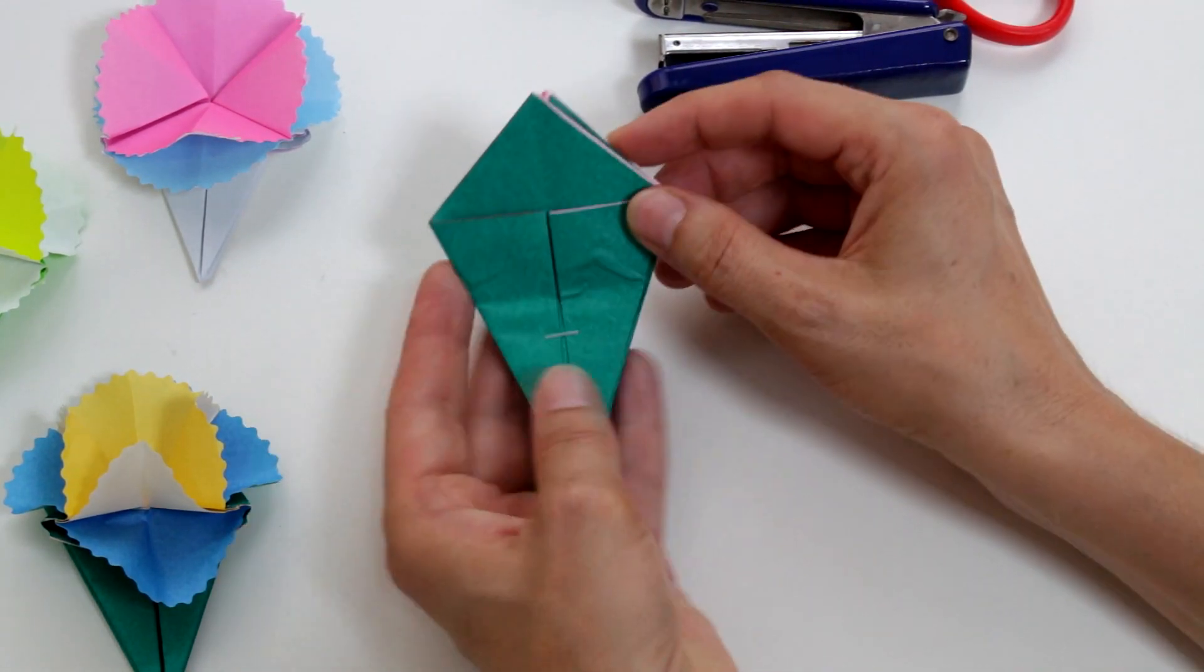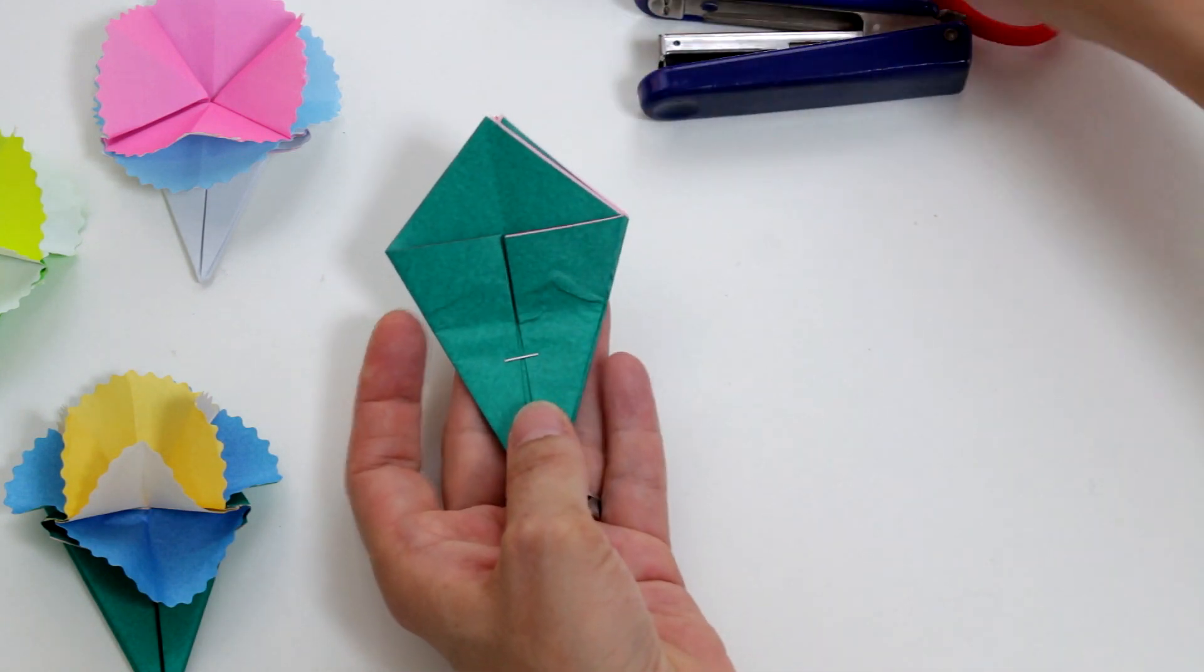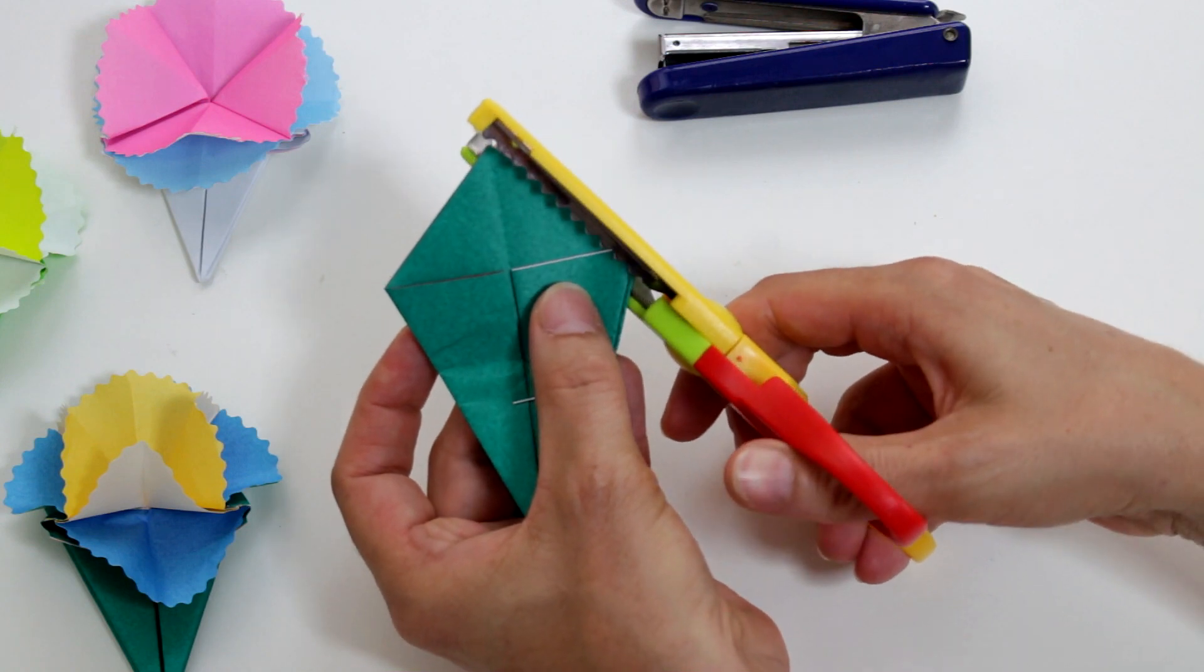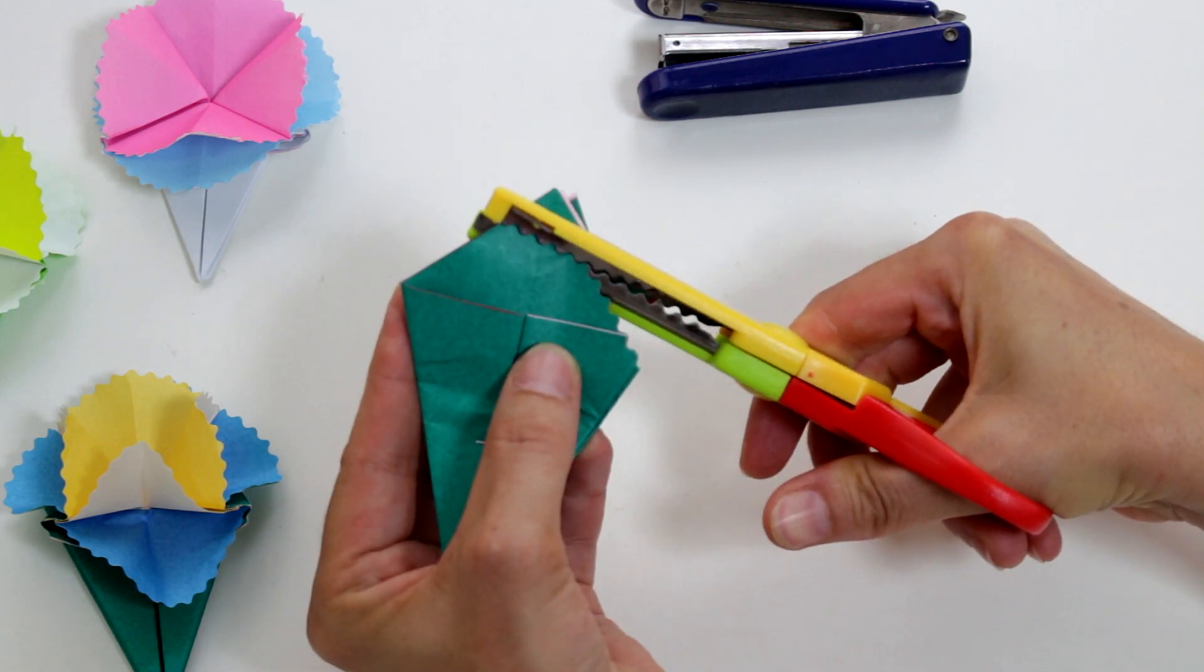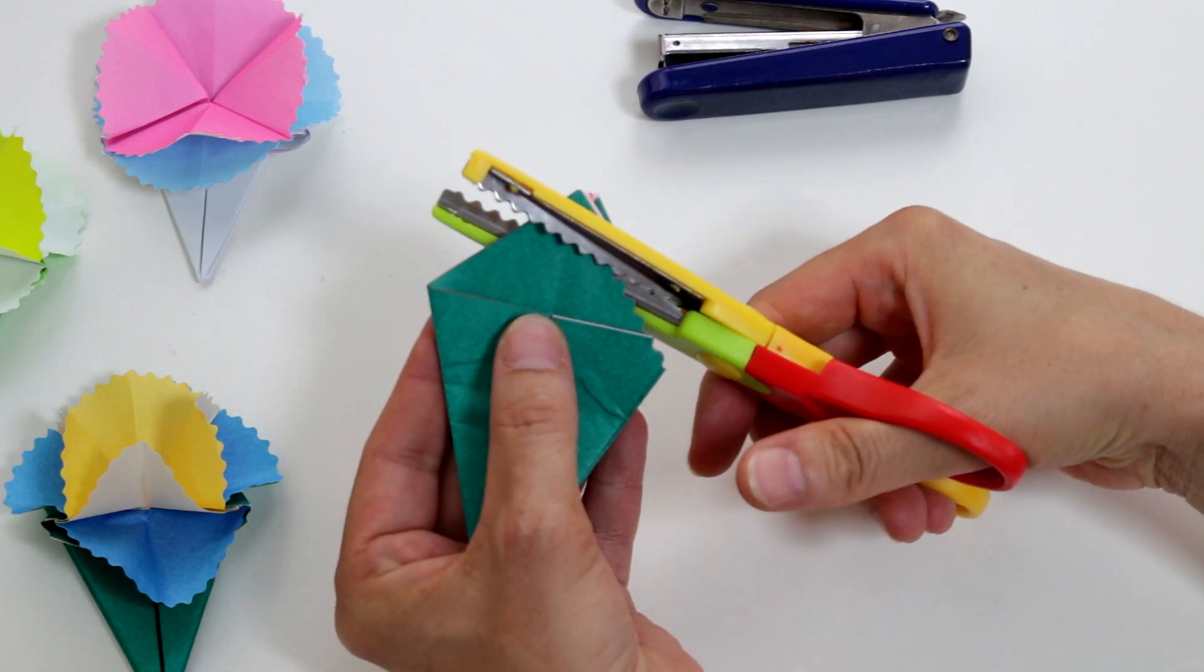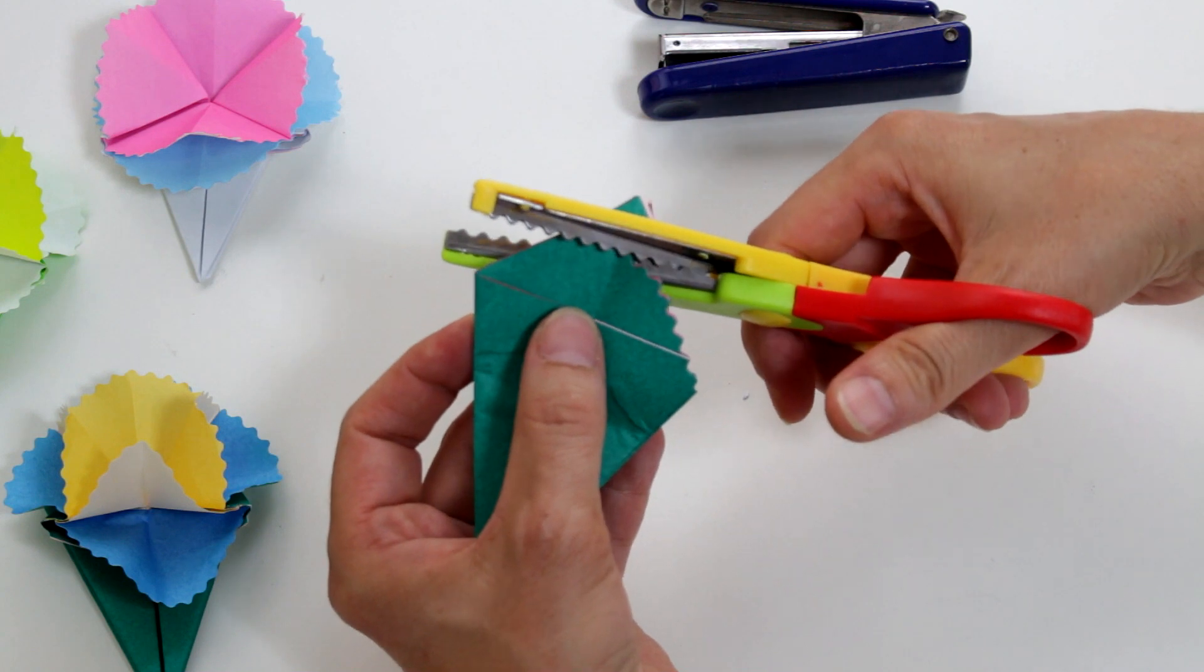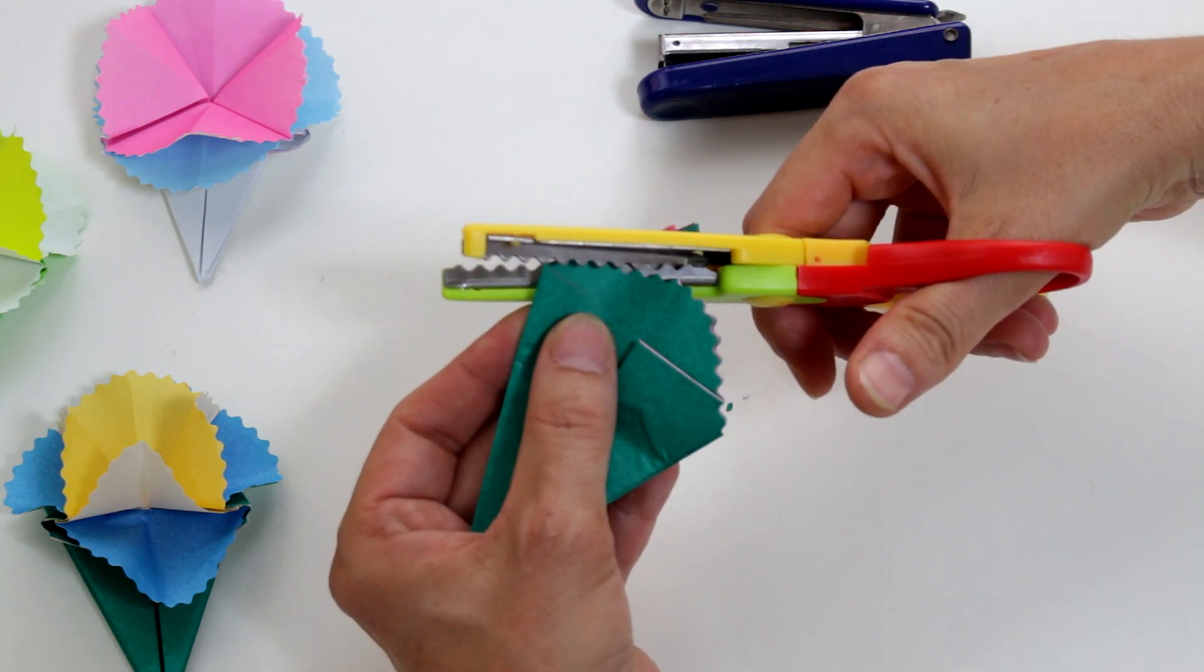Now we're going to cut the petals. That means we're going to cut half a circle around here with the pinking shears. If you don't have pinking shears, you can make a zigzag cut using regular scissors.